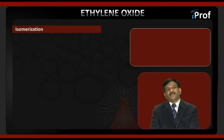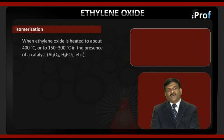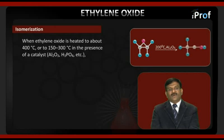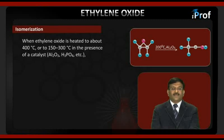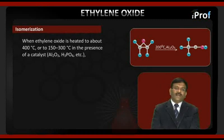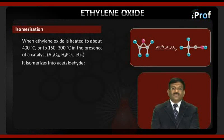Next, the isomerization. When ethylene oxide is heated to about 400 degrees centigrade, or to 150 to 300 degrees centigrade in the presence of a catalyst — alumina or S3PO4 — it isomerizes into acetaldehyde.